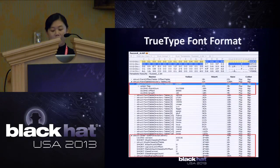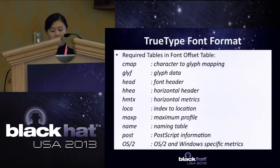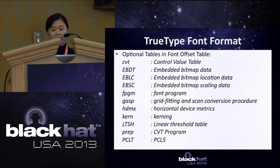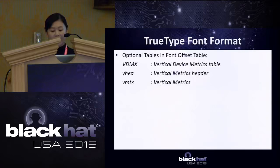Each value of the font table directory relates to a particular font payload. The required tables in the font offset table include CMAP, glyph, HEAD, HHEA, LOCA, MAXP, and others. Optional font tables include CVT, EBDT, EBLC, EBSC, and more. All tag names for each table must be registered under Apple Developer Technical Support.